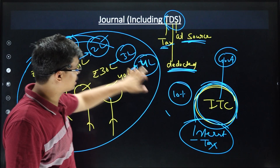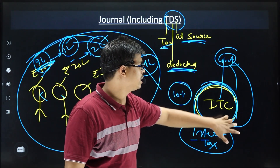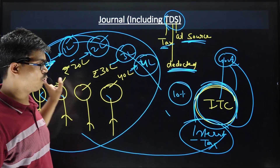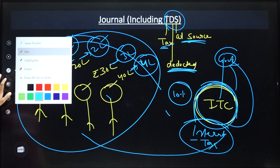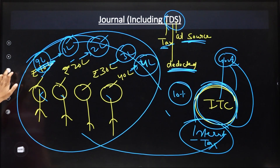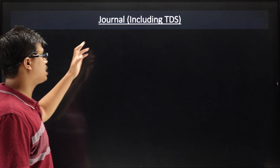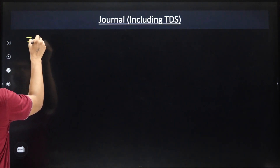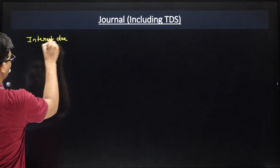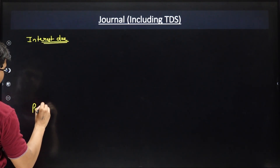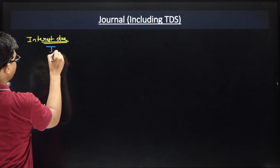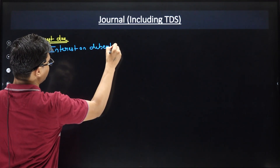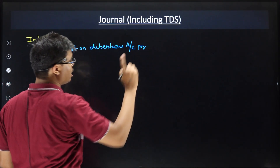So in this situation the company will cut the tax, give it to the government, and give the public a TDS certificate. Now let's go to the journal entry. When interest becomes due, what happens first? Interest due — and then, interest payment. Always remember this entry.